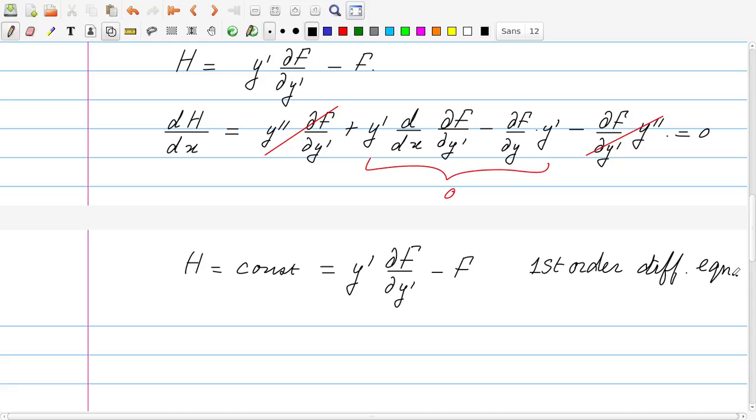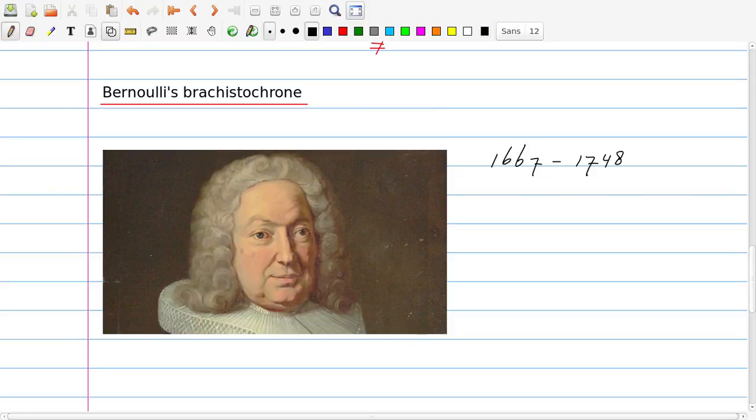So that was the mathematical background for the variational calculus. And now we will move on to consider the example of the Brachistochrone. So here you see a picture of Bernoulli, who formulated the Brachistochrone problem as a challenge to the mathematicians of his time. And sadly for him, Newton took only a few hours to solve the problem, and that was when he was no longer really very active as a researcher anymore.